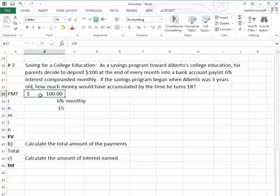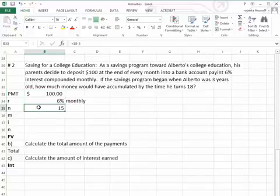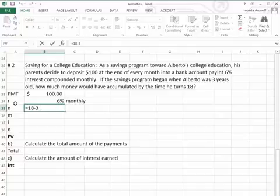Well, the periodic payment is $100. The interest rate is 6% compounded monthly. And the 15 years is basically equal to the 18 minus the 3, which tells us we're doing this for 15 years.